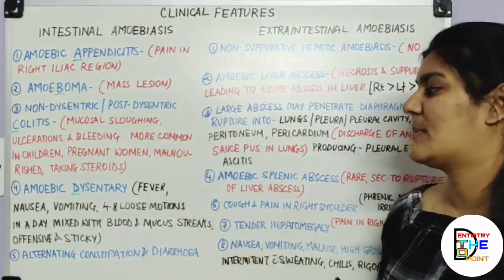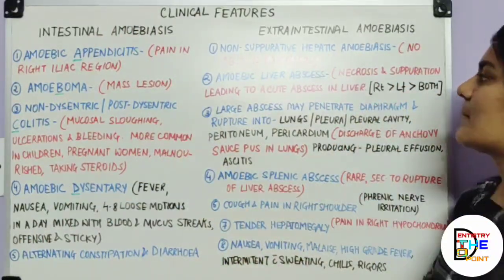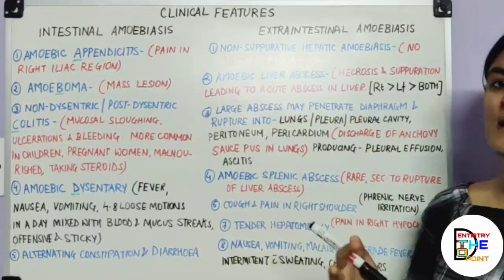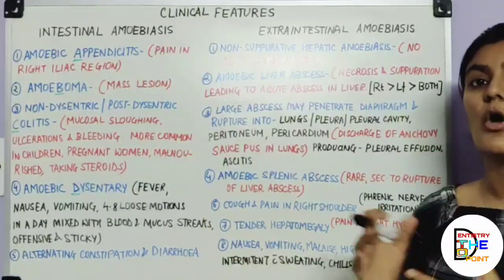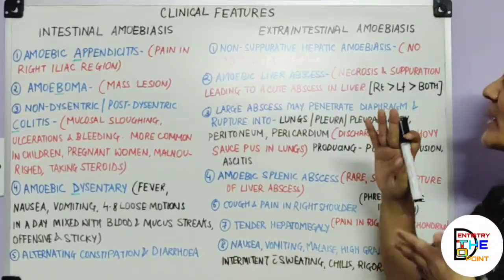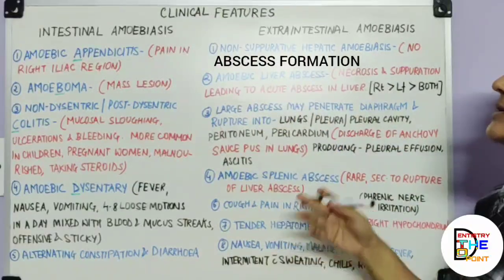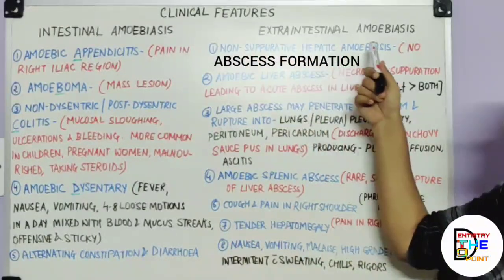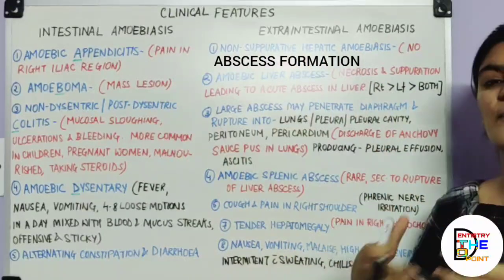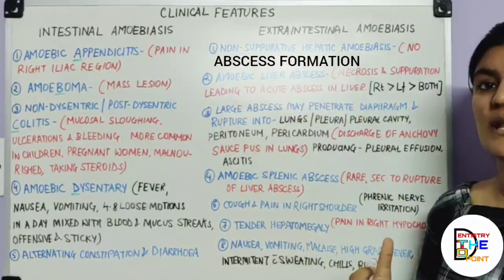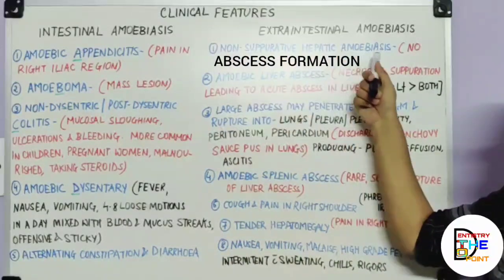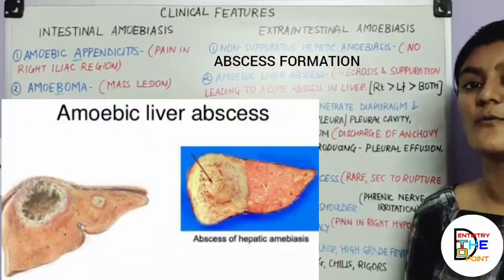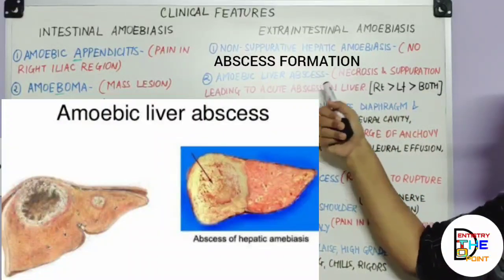Moving on to extra-intestinal amoebiasis. Two types can be manifested. First, when the liver is involved with enlargement but no abscess formation, that is non-suppurative hepatic amoebiasis — no pus formation or necrosis. Second, amoebic liver abscess — when there is involvement of the liver with the formation of acute abscesses, necrosis, and suppuration leading to acute abscess in the liver.